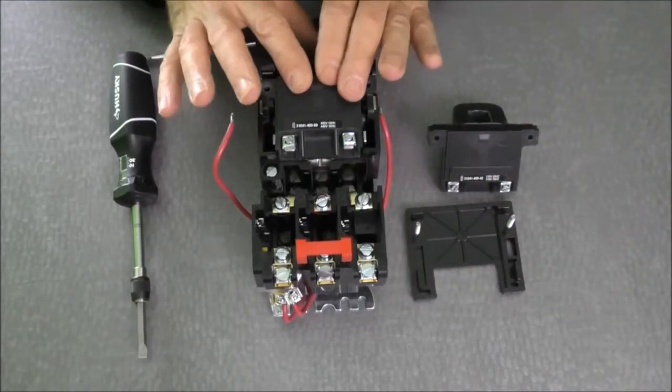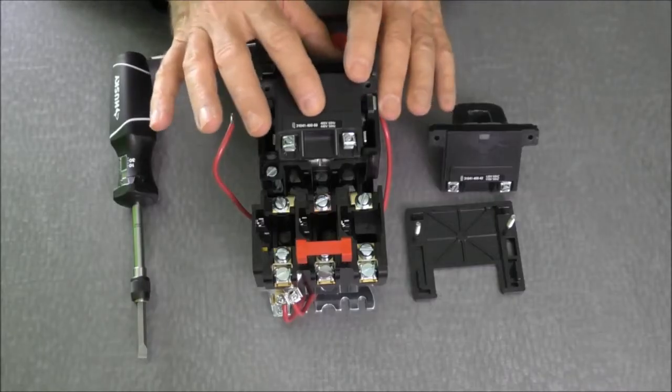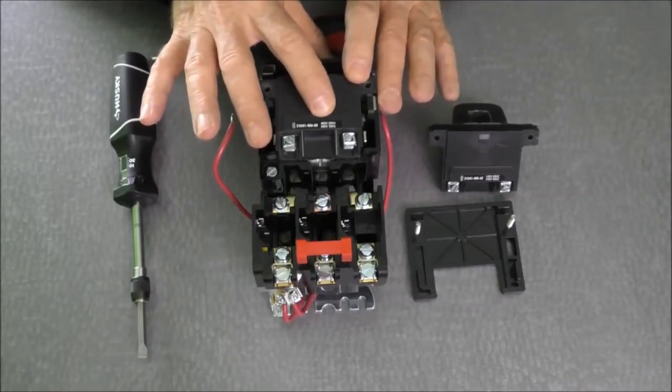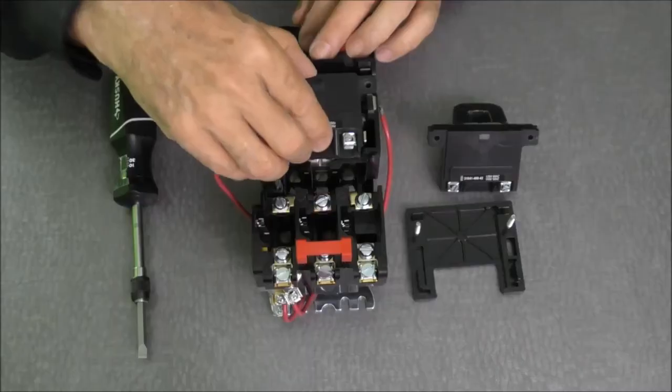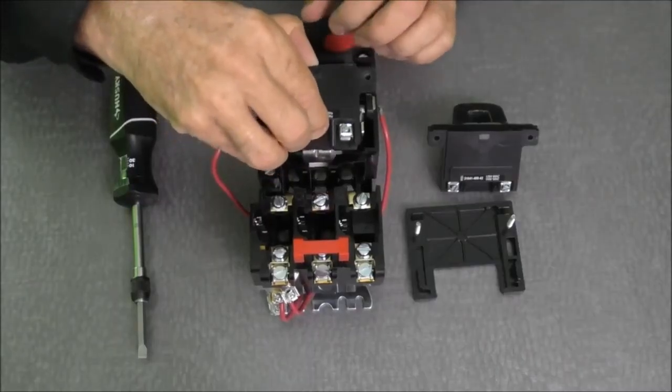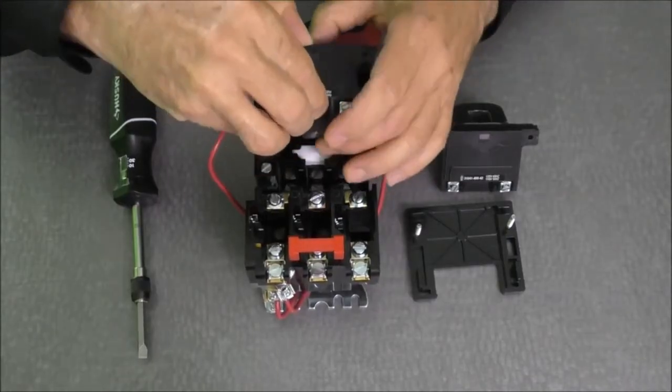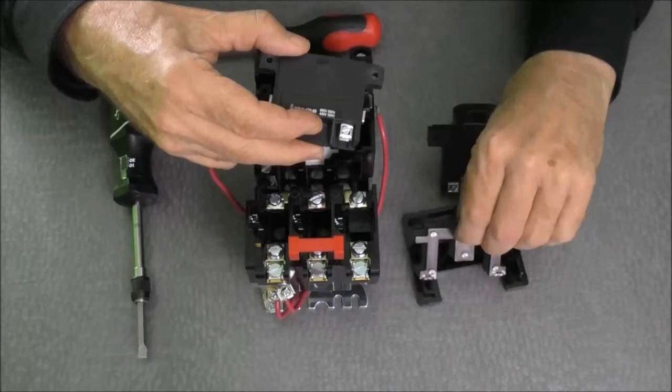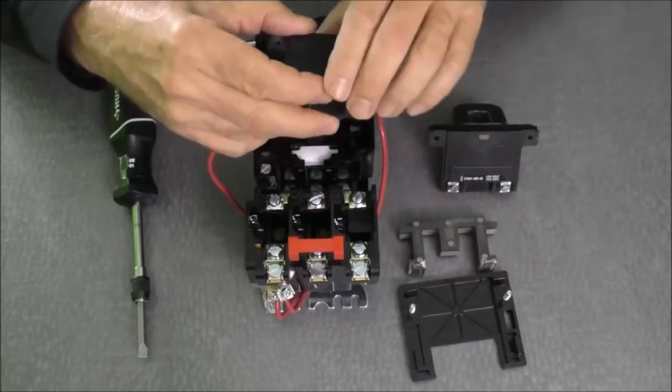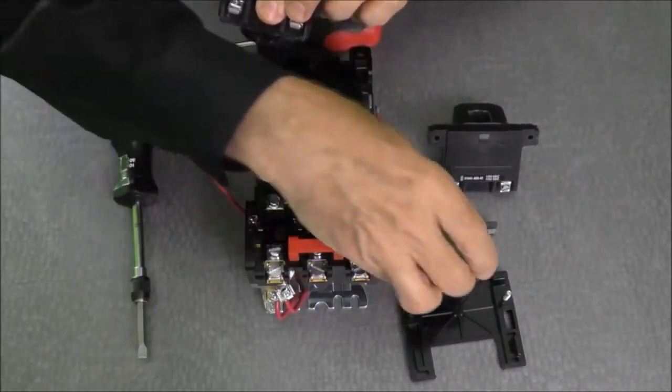Once that's accomplished, we have the coil exposed. This particular coil happens to be rated for 480 volt 60 hertz, 440 volts 50 hertz. My next step will be to pull the coil straight up, and when I pull that coil straight up, I get the magnet and I get the armature that comes out with the coil.